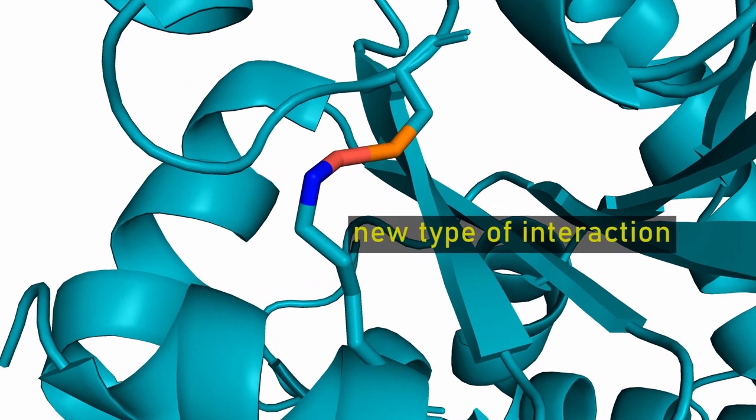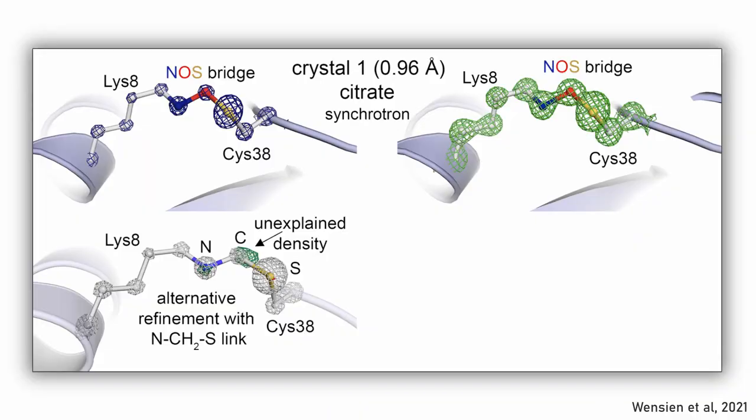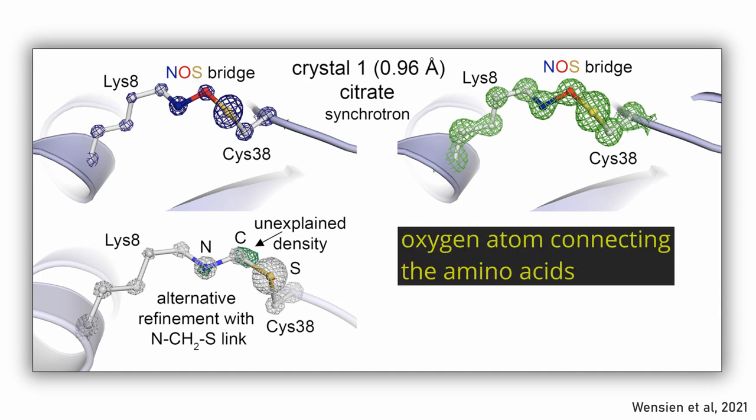So it had to be a new kind of interaction, and x-ray structures of NGTAL's oxidized state revealed a crosslink between a cysteine and a lysine, with an unidentified atom in the middle. This atom connecting the two amino acids later turned out to be oxygen.